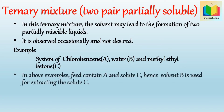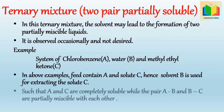In this example, the feed contains component A, that is chlorobenzene, and solute C, that is methyl ethyl ketone. For extracting the solute C, solvent B, that is water, is used. Component A (chlorobenzene) and solute C (methyl ethyl ketone) are completely soluble, while the pair of A and B, and the pair of B and C, are partially miscible with each other.